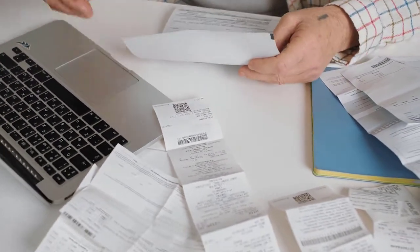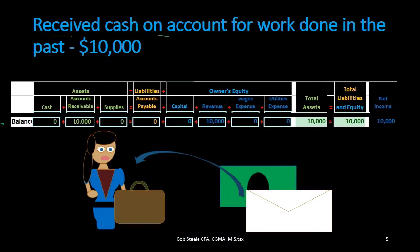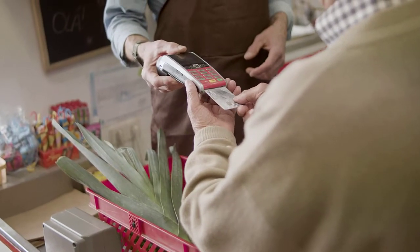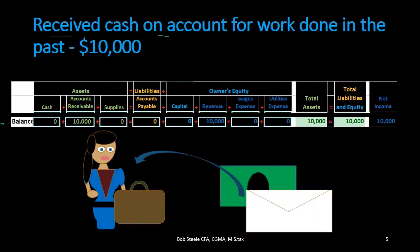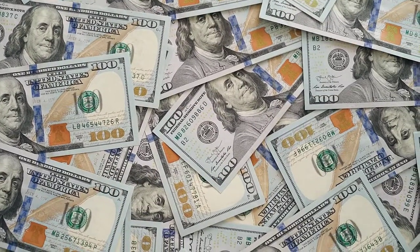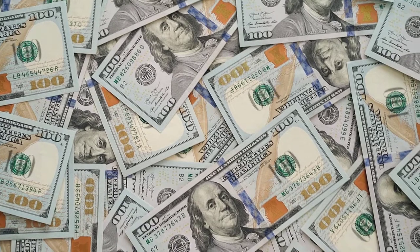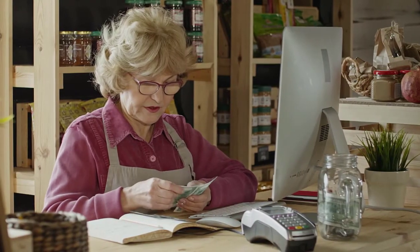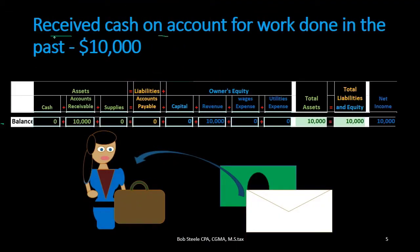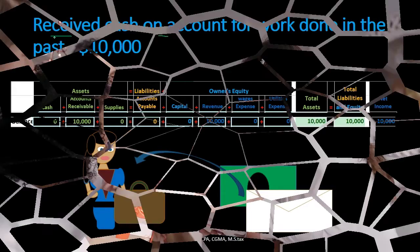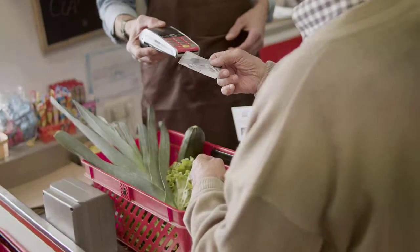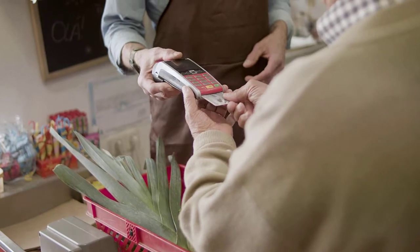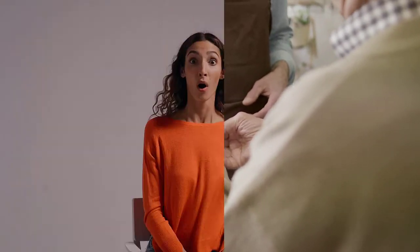We may also see the phrase 'on account,' which typically makes us think of accounts receivable or accounts payable — and it may seem like cash isn't involved. But this is the second transaction: first we did work on account with no cash, and now we receive cash on account. That means both cash and accounts receivable will be affected. Cash is going to increase since we received it.